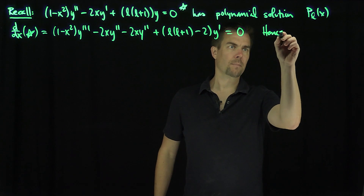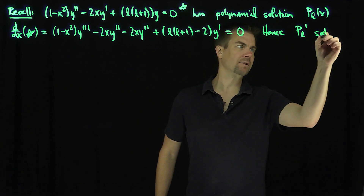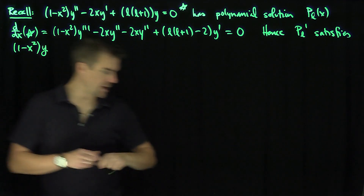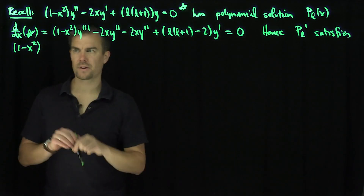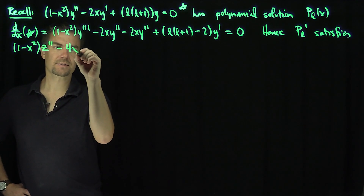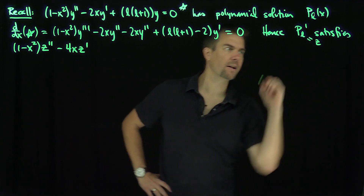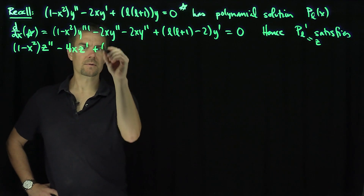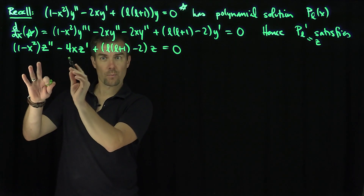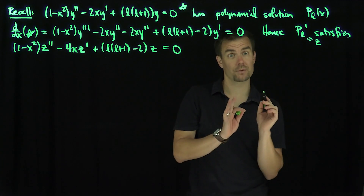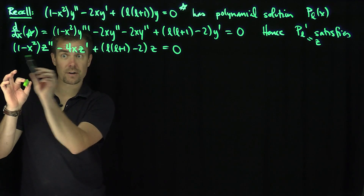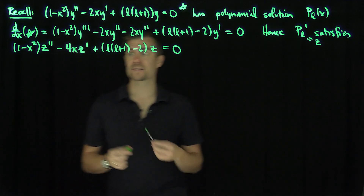So P_l' satisfies this equation. Let's call the dependent variable z to avoid confusion. We get: (1 - x²)z'' - 4xz' + [l(l+1) - 2]z = 0. This is not the Legendre equation anymore — it's the derivative of it, satisfied by P_l'. Notice the first two terms are not in self-adjoint form, so we'll need to address that.